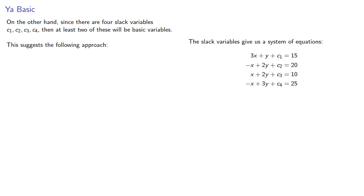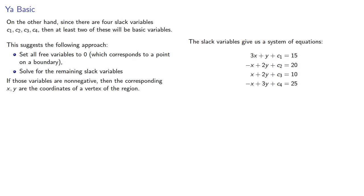And this suggests the following approach. Set all free variables to zero, which corresponds to a point on a boundary. Solve for the remaining slack variables. And if those variables are non-negative, the corresponding xy are the coordinates of a vertex in the region.